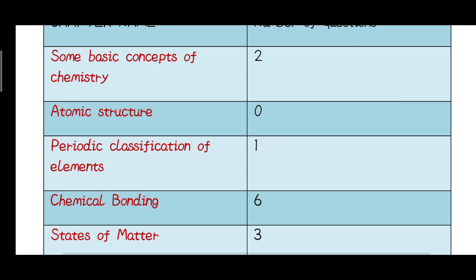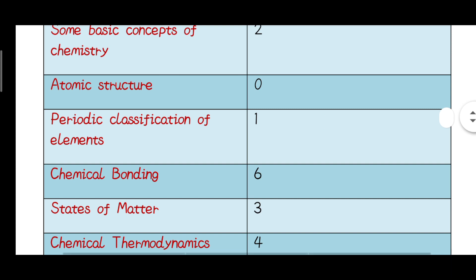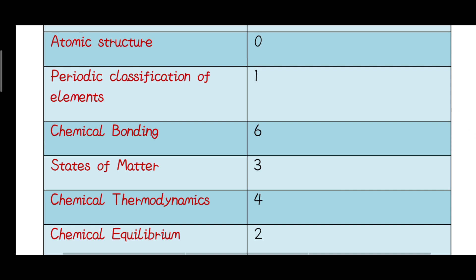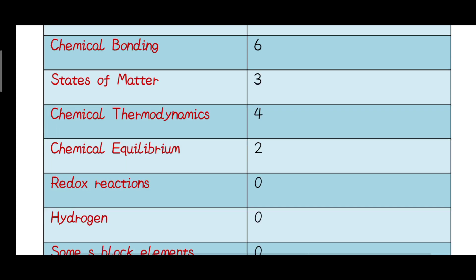This topic is not included and is not very important. Chemical bonding is a very important chapter, and this question is at a relatively moderate level. NCERT is not very important here. Topics covered include VSEPR theory structure, bond order, and isoelectronic species.